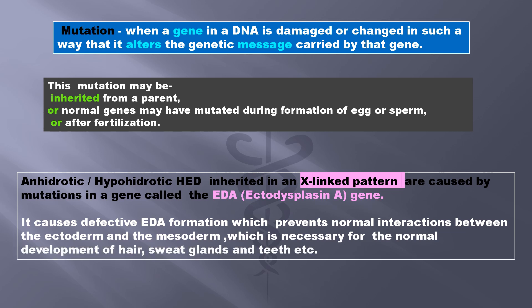Anhydrotic or hypohydrotic ectodermal dysplasia inherited in an X-linked pattern are caused by mutation in a gene called the EDA, or the ectodisplacin A gene. It causes defective EDA formation which prevents normal interaction between the ectoderm and mesoderm, which is necessary for normal development of hair, skin, sweat glands, etc.